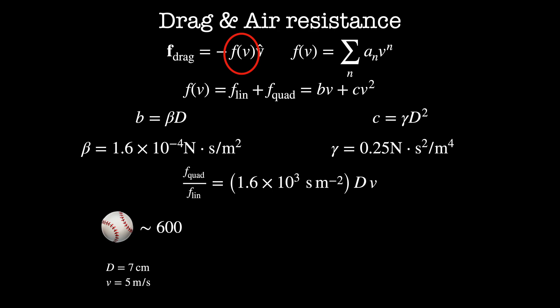Next, imagine I sneeze. A sneeze has droplets that are approximately five microns in diameter, and they travel pretty fast, about 50 meters per second. This has a quadratic to linear drag ratio of about 0.05. Since this ratio is of order one, both quadratic and linear drag forces are important to the system.